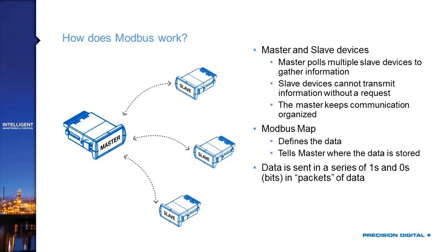When master and slave devices communicate, they use one of those buses we discussed earlier — sending series of zeros and ones in data packets. The Modbus protocol defines what that data packet looks like: so many bits for the device address, so many bits for the register, so many bits for a function code (like 'write this data' or 'send back this information'), then bits for the data, ending with error checking. That format is really what Modbus is all about.